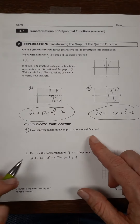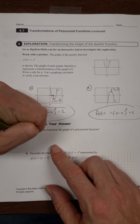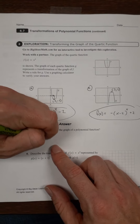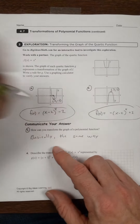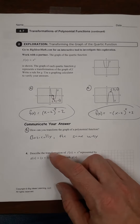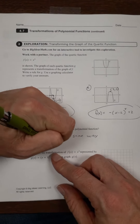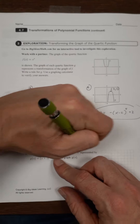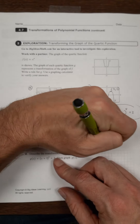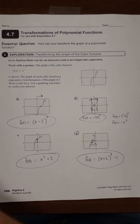For number three — how can you transform the graph of a polynomial function? Basically the same way we've been transforming everything all year. The transformation rules transfer over to polynomials just fine. It's important to note that and write it down.